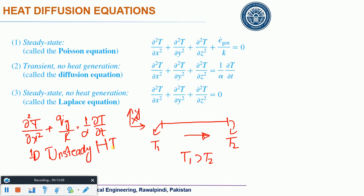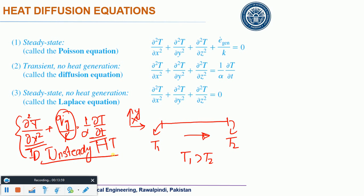In this 1D unsteady case, you have a source term. For example, an exothermic reaction within the body makes q̇_g positive (energy is produced), while an endothermic reaction makes q̇_g negative (heat is absorbed). To solve this equation, you need two boundary conditions and one initial condition.